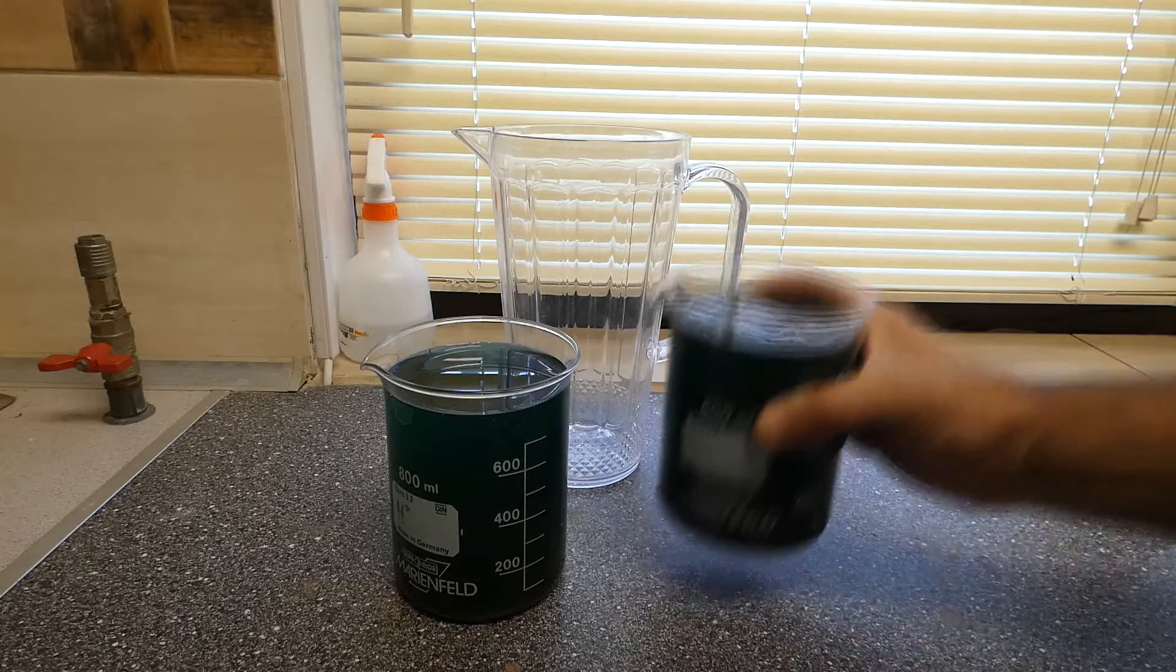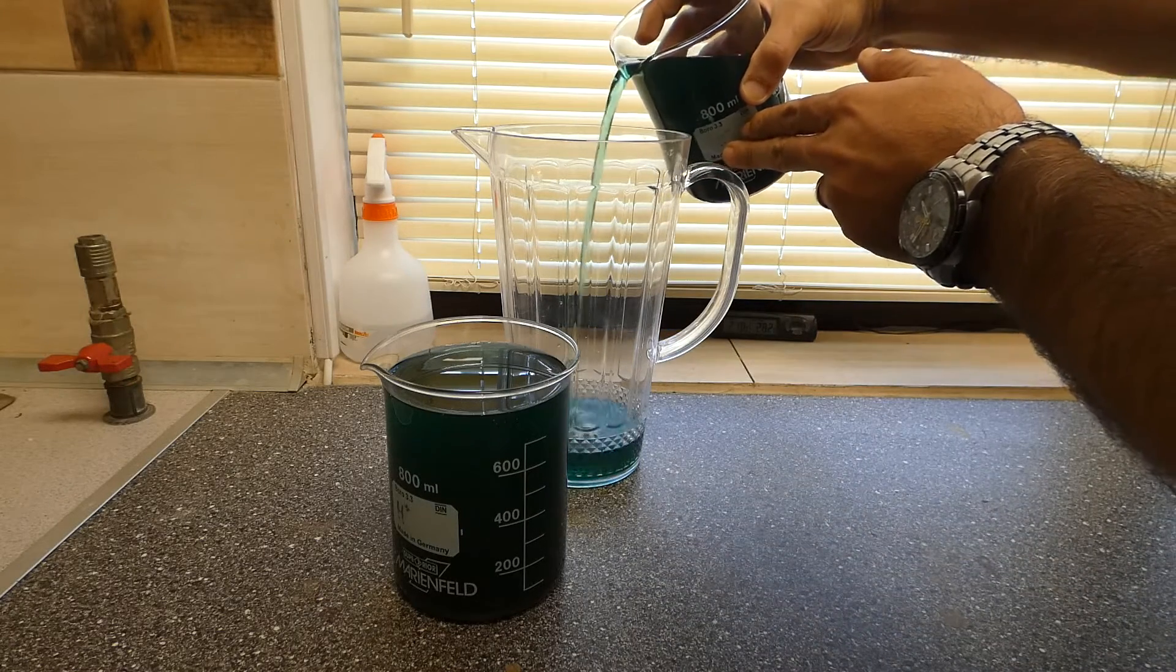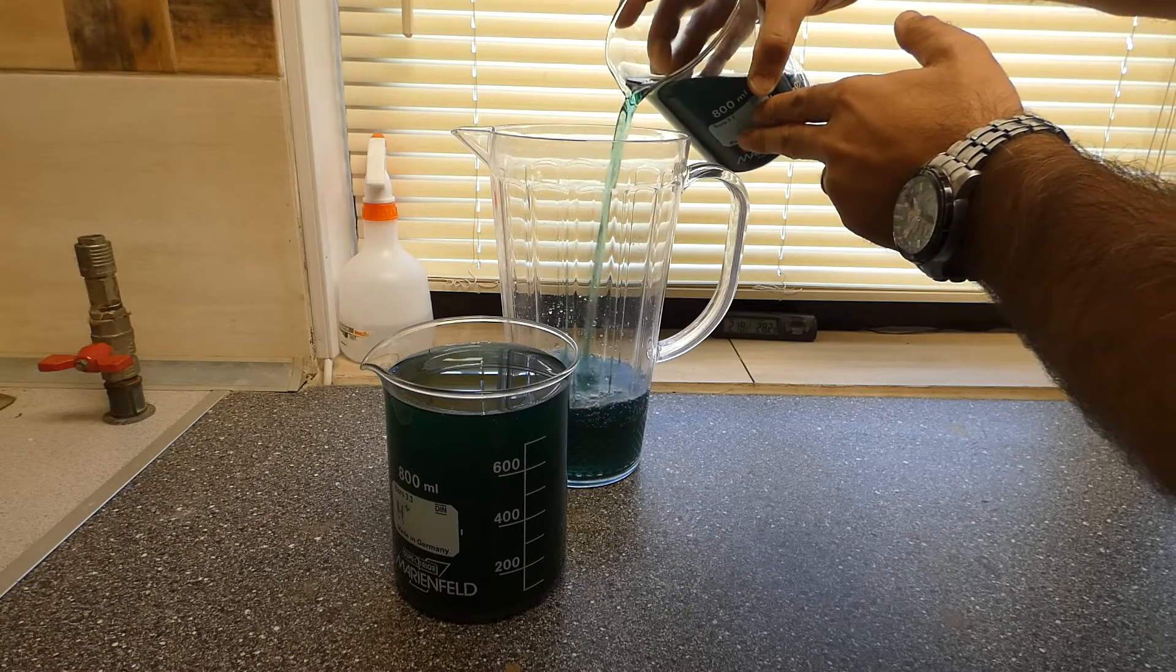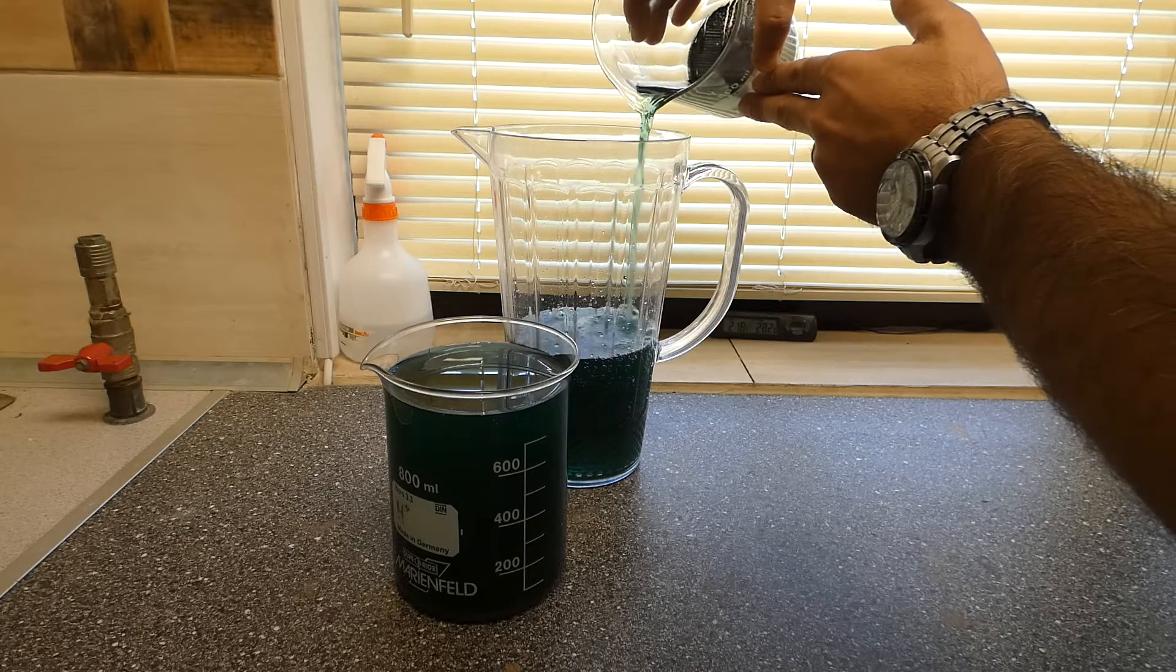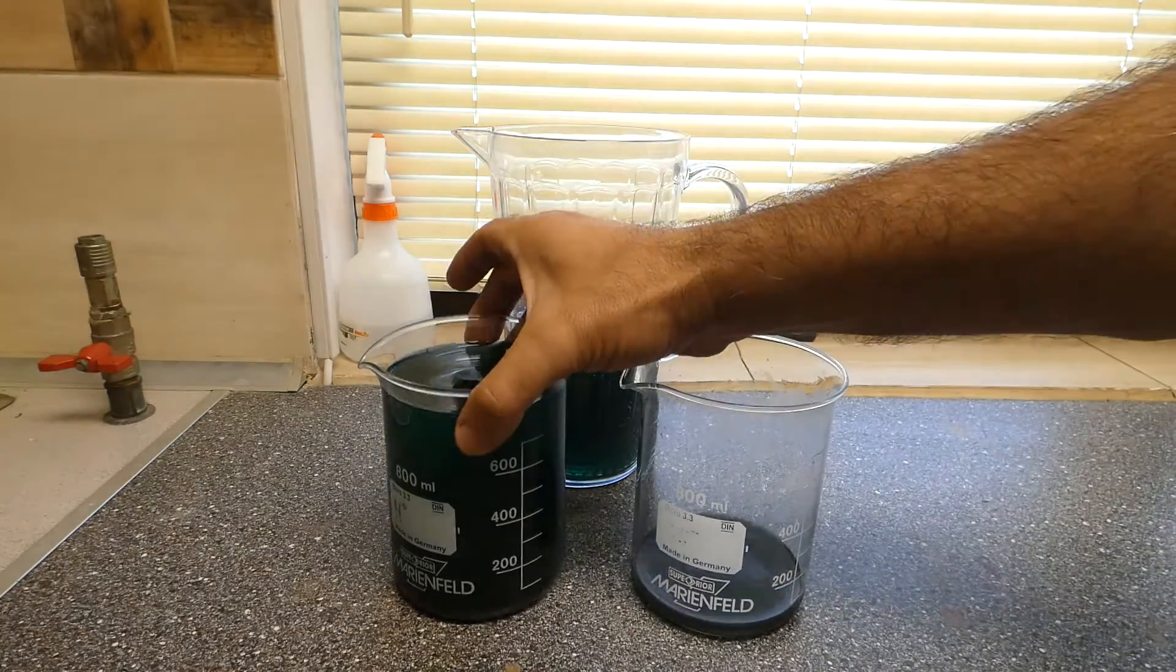While it is still hot, I diluted it with 6 to 8 times its volume with water, because otherwise upon cooling nickel nitrate crystals will form, which will trap between them the platinum particles. At the end, I left the solution to cool and decant overnight, and then I carefully drained the liquid from above.